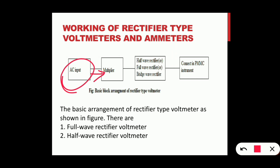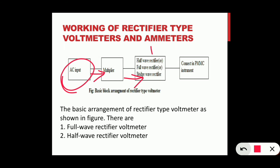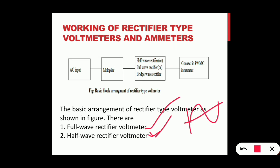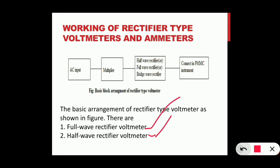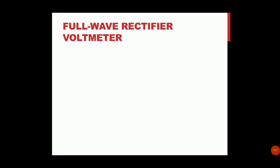We multiply the voltage for the half-wave rectifier. Here DC is converted, and the PMMC instrument measures the deflection. There are two types: full-wave rectifier and half-wave rectifier. The full-wave rectifier uses both positive and negative half cycles, while the half-wave rectifier uses only the positive or negative cycle.